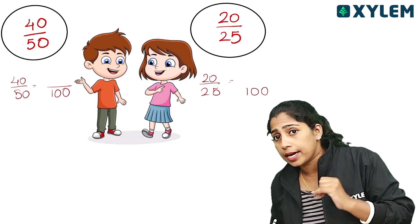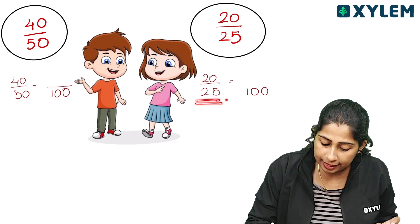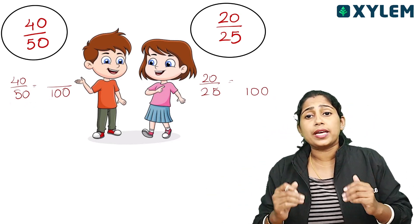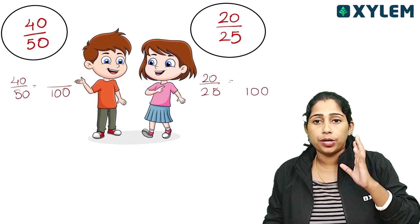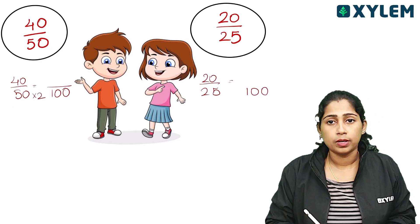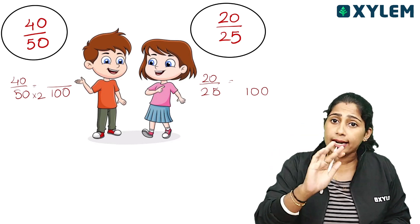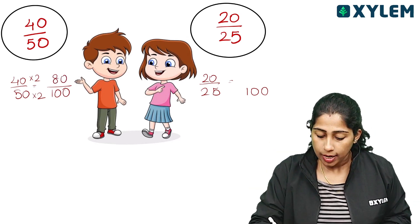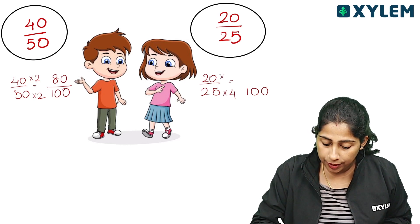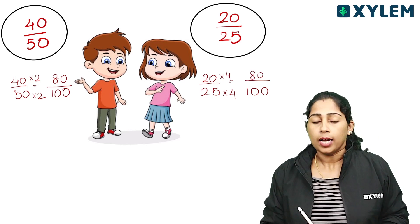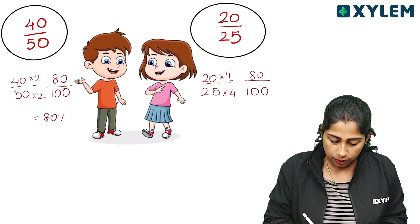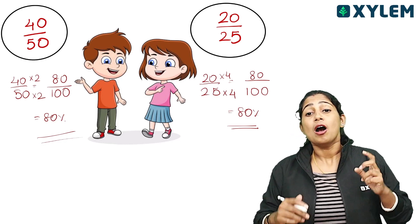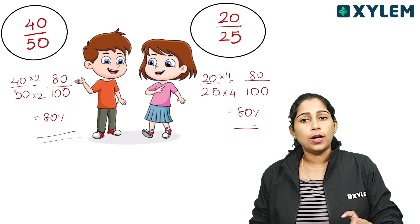Because the denominator needs to be 100. For 25, what do we multiply to get 100? That's 4. So 25 multiplied by 4 equals 100. So 80 divided by 100 gives 80 percentage. Both performances work out to 80 percentage. Both the boy and the girl have the same percentage — 80%.